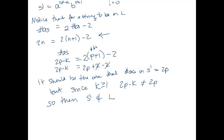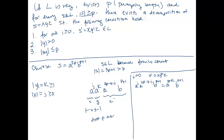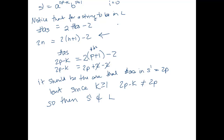So we have a contradiction — s prime can't be in the language. But if the language were regular, all of this should hold, meaning that for some decomposition it's the case that for all i, the pump string is in the language. We considered every decomposition and showed that for every valid one we can find some i — specifically i equals 0 — so that the pump string is out of the language. Therefore, our assumption that the language is regular is incorrect. L cannot be regular.